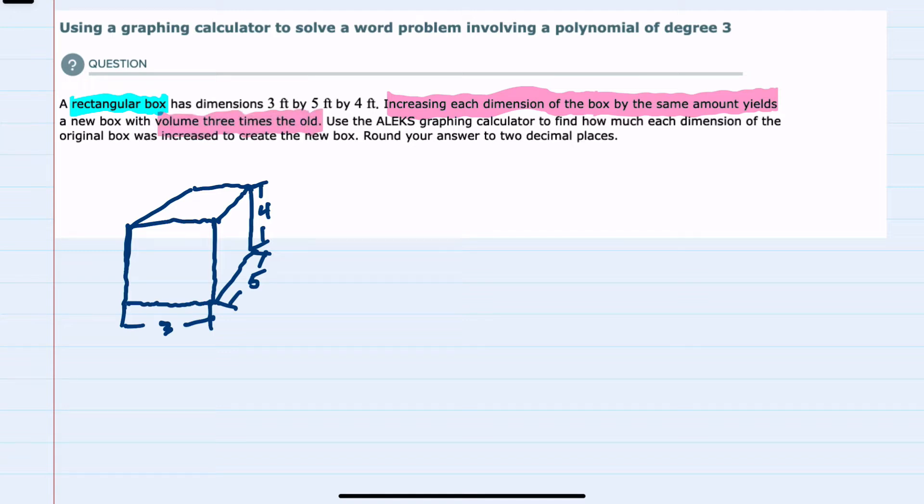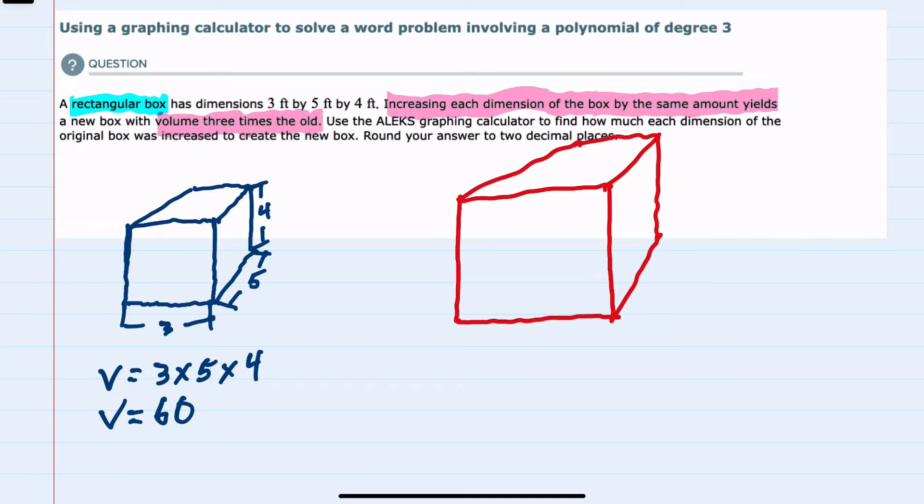First, the volume of our original box is length times width times height, so our original volume here is 60 cubic feet. Our new box has had each one of these dimensions increased by the same amount.